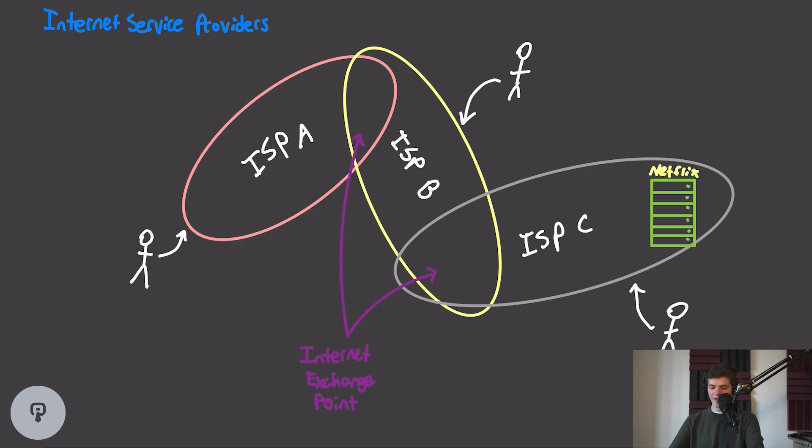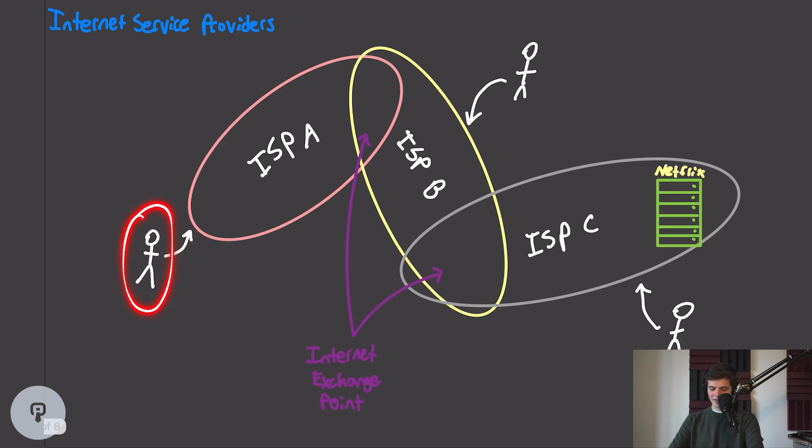So let's consider a scenario where we have three ISPs, ISPs A, B, and C. We have some users connected to any of them. However, Netflix's data center is connected within ISP C. So our user in ISP A here is going to have to connect through their ISP, peer to another ISP at this internet exchange point, connect all the way through ISP B, peer at another internet exchange point, and then finally go through ISP C to finally get to Netflix's data center.